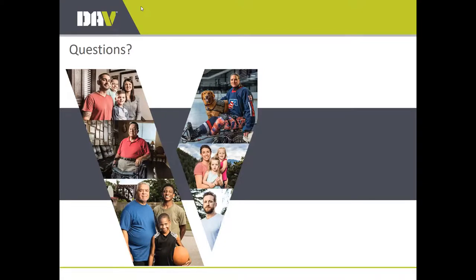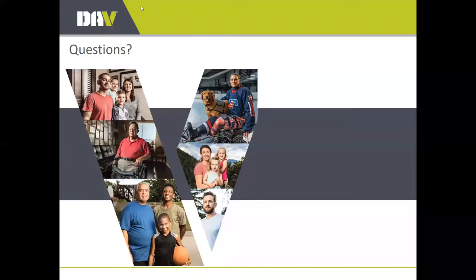Next question: why would a person have more than one membership, and what are the rules? The late, great past national commander Larry Polzin out of California had, I think, 47 memberships when he passed — his goal was almost to have a membership in each state. A member can have one membership per state, plus Puerto Rico and DC. The restriction is really about voting integrity — when you register for a department or national convention, you have to declare which chapter you're registering as a delegate from.